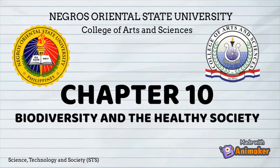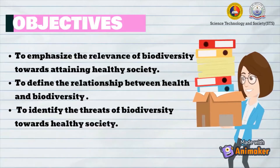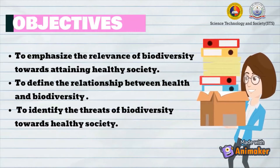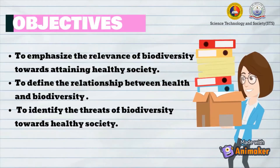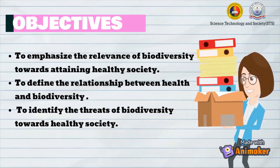Hello everyone, welcome to Chapter 10 of Science, Technology and Society. The title of this chapter is 'Biodiversity and the Healthy Society.' The learning outcomes of this chapter are: first, to emphasize the relevance of biodiversity towards attaining a healthy society; second, to define the relationship between health and biodiversity; and last, to identify the threats of biodiversity towards a healthy society.